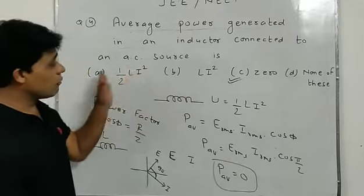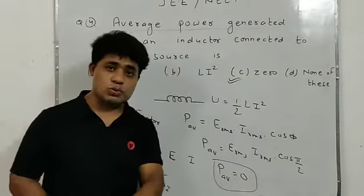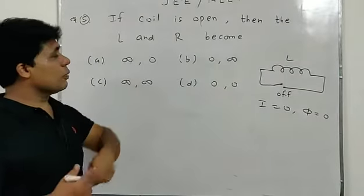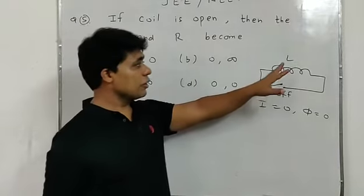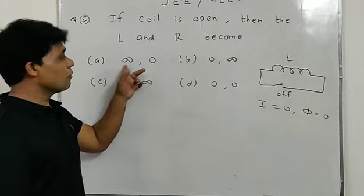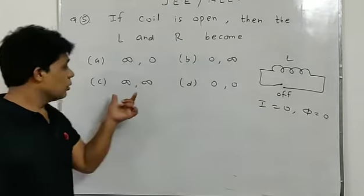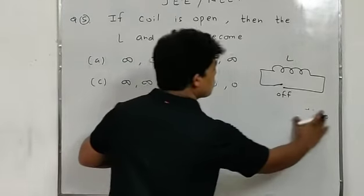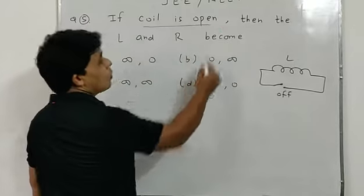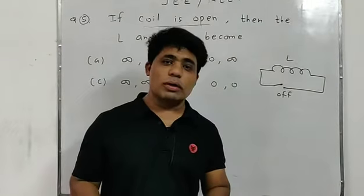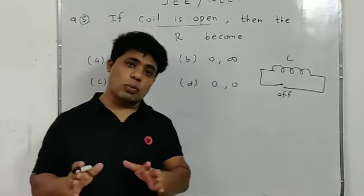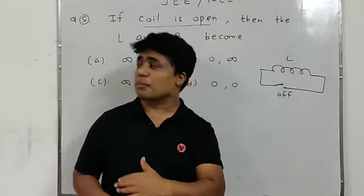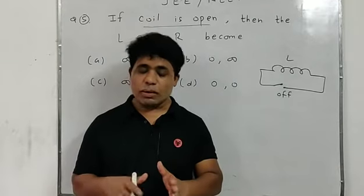Question number five: If a coil is open, what are the values of L and R? Options: (∞, 0), (0, ∞), both ∞, or both 0. When the coil is open, there will be no current — the switch is off. With no current, induced flux will also be zero.